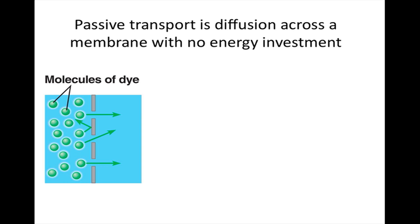Passive transport is diffusion across a membrane with no energy investment. Diffusion is a tendency for particles of any kind to spread out evenly in an available space, moving from where they are more concentrated to regions where they are less concentrated. Molecules vibrate and move randomly as a result of a type of energy called heat. Diffusion requires no work — it results from the thermal motion of atoms and molecules. Because a cell does not perform work when molecules diffuse across a membrane, the diffusion of a substance across a biological membrane is called passive transport.